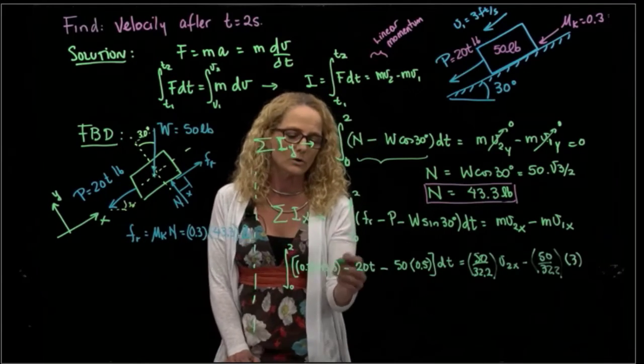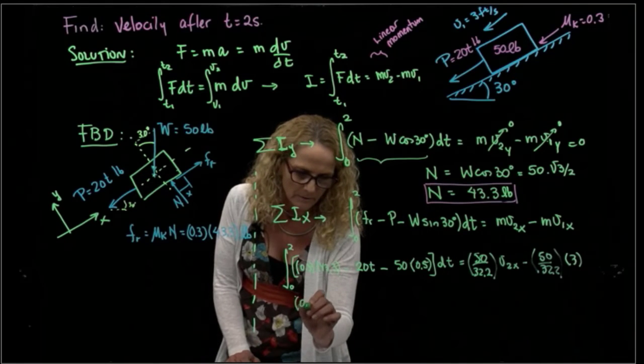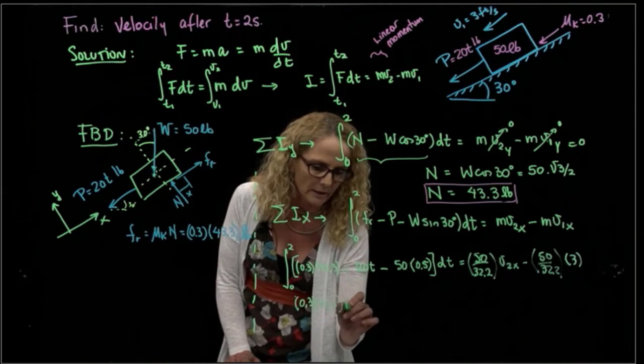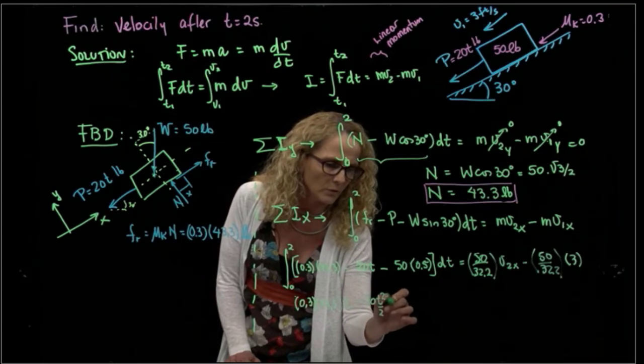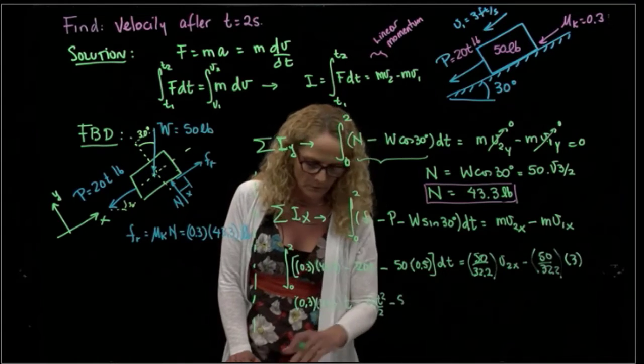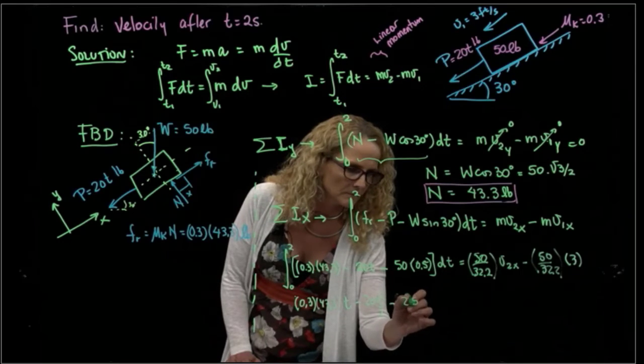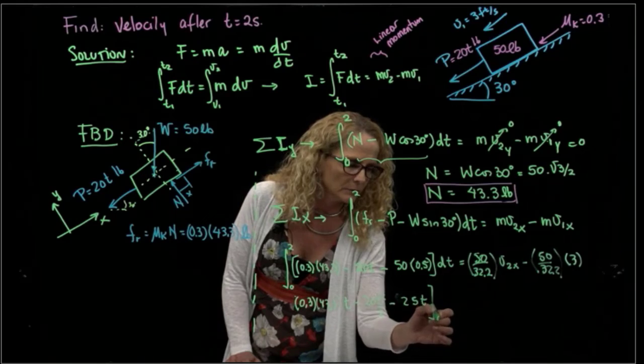This is a constant, so the integral of that will be 0.3 times 43.3, I haven't done the multiplications because I do it at the end, minus 20T squared over 2 minus 50 times 0.5 is 25T, and all that between 0 and 2.